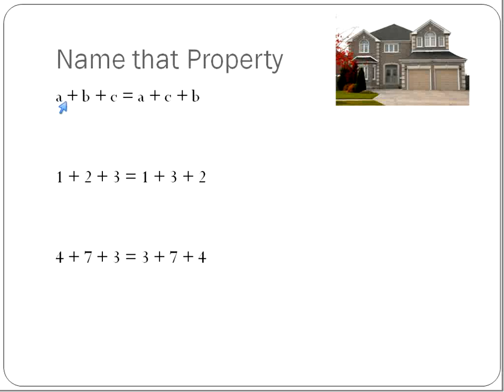This one says A plus B plus C is A plus C plus B — we're changing the order here. 1, 2, 3 is 1, 3, 2 when we're adding; 4, 7, 3 and 3, 7, 4. We're adding the same numbers in a different order. The numbers are commuting from one place to another — we call that the commutative property.